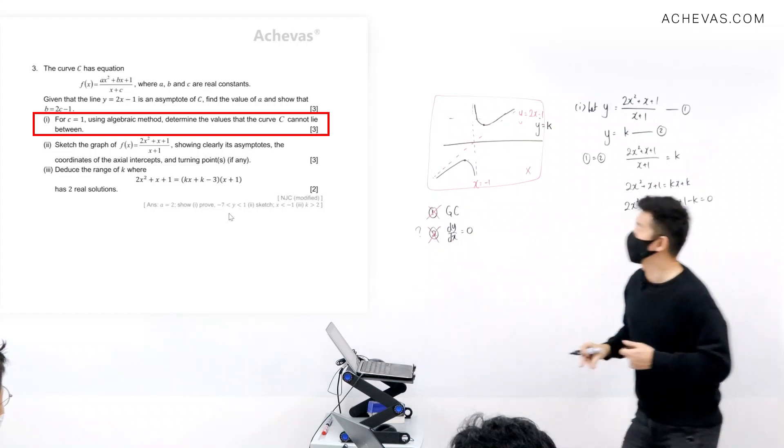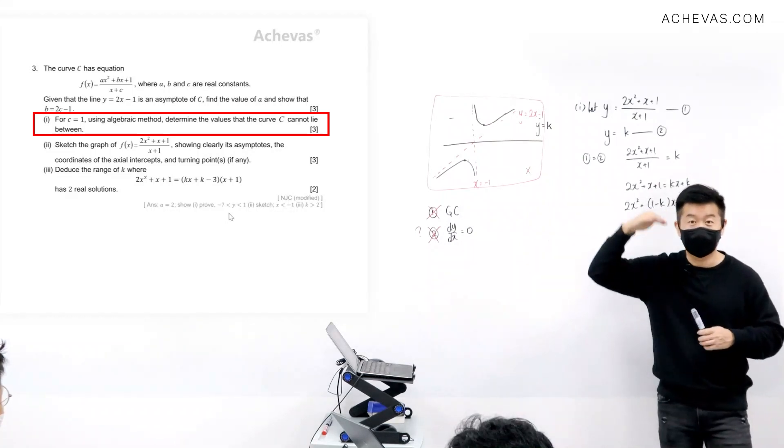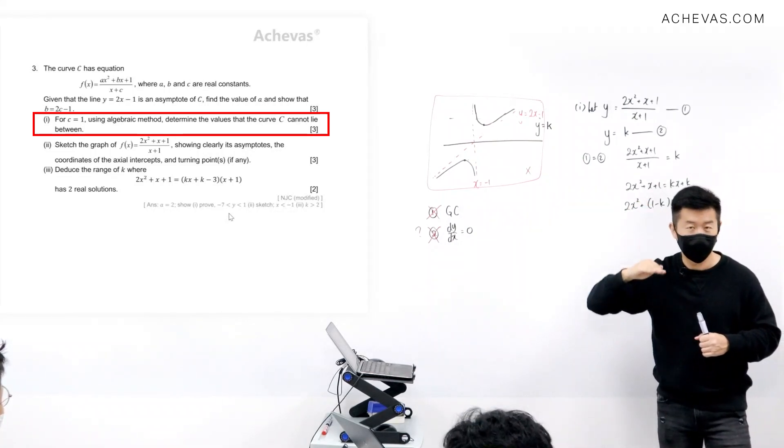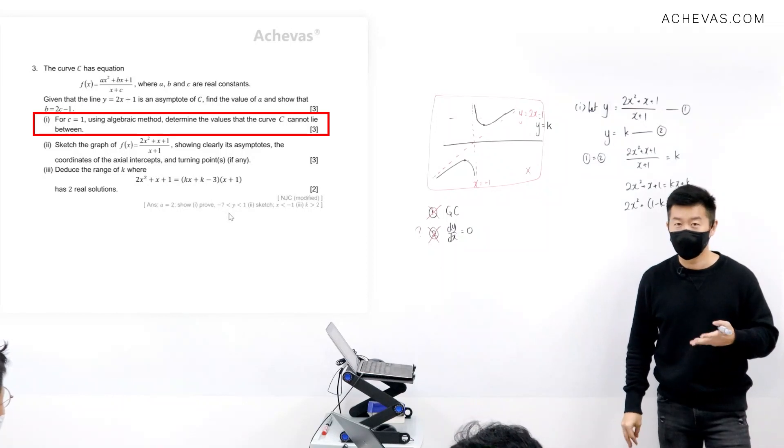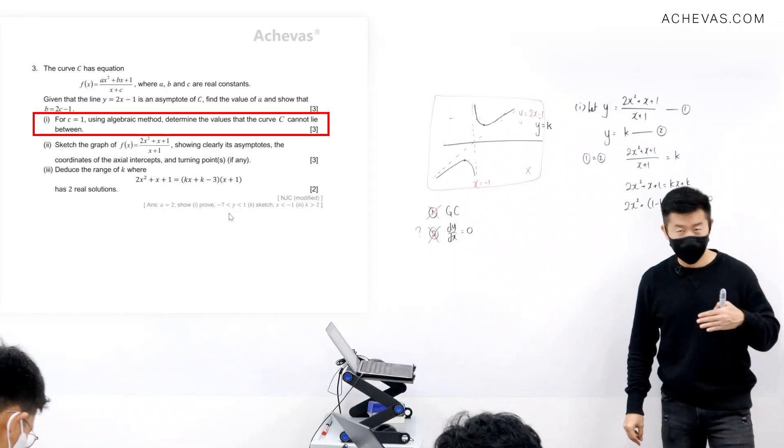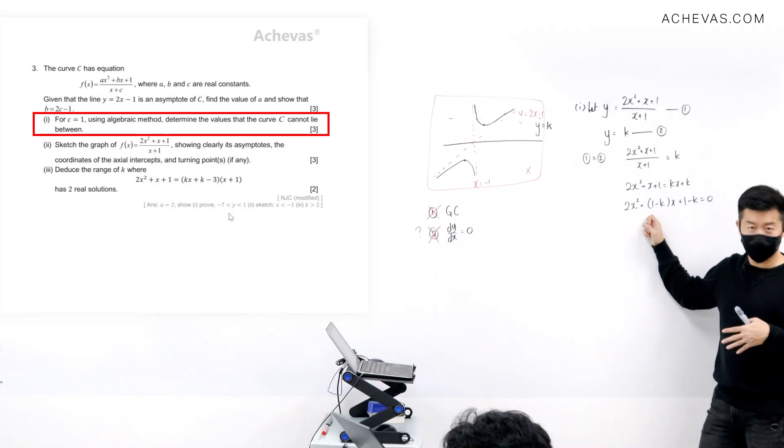If I were to let this horizontal line be here, floating at a place where the curve cannot lie between, then this horizontal line will not cut the curve, right? Which means that I will not be expecting a solution to this.